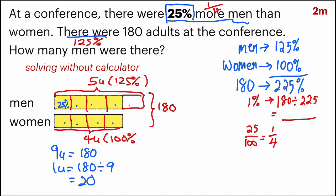And the last step, to find men, which there are a total of five units, I will take 20 times 5, which gives me 100. And that's my answer.